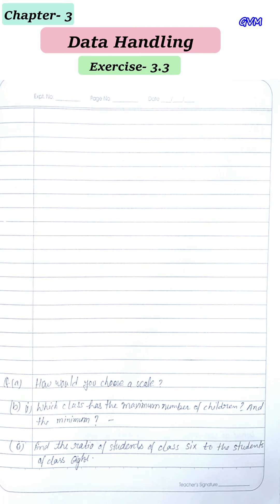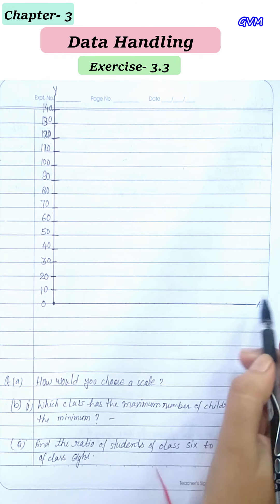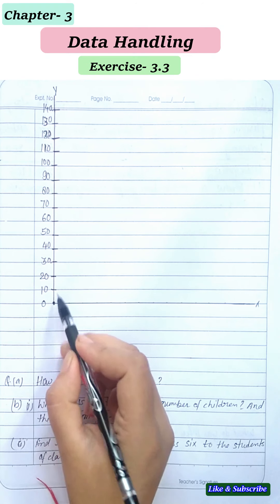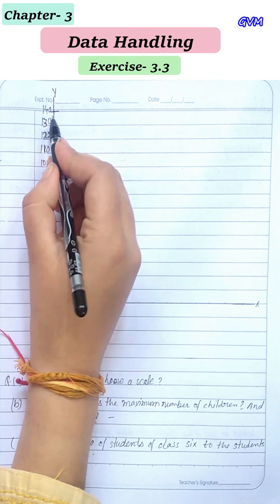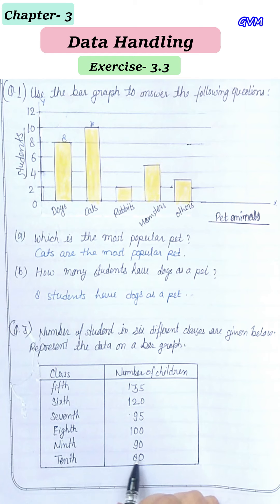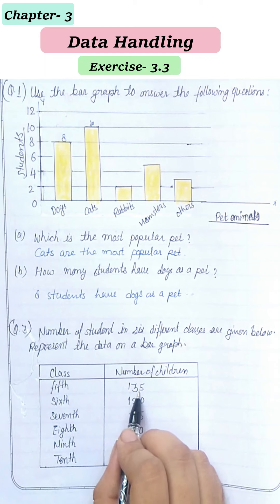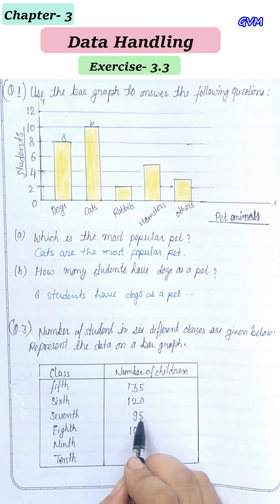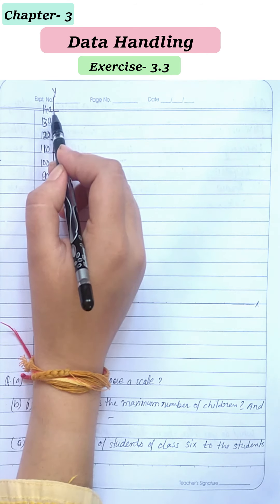Let's make the bar graph. I have drawn the y-axis and x-axis. I am taking a scale where one unit represents 10 students. I am taking the y-axis from 0 to 140, because the values I have are 80, 90, 95, 100, 120, and 135 — so the scale goes up to 140 to accommodate 135.